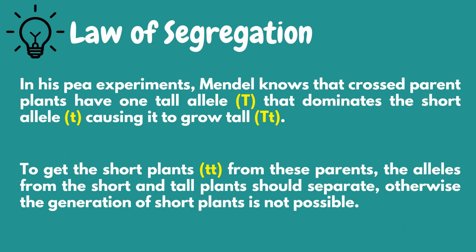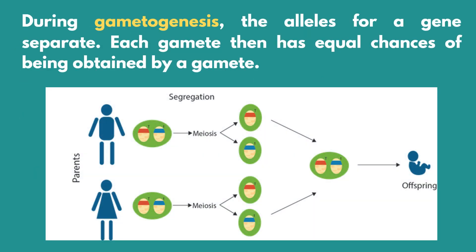The second law is the law of segregation. It states that alleles segregate randomly into gametes. When gametes are formed, each allele of one parent segregates randomly into the gametes, such that half of the parent's gametes carry each allele. In his experiment, Mendel knew that cross-parent plants have one tall allele that dominates the short allele, causing it to grow tall. To get short plants from these parents, the alleles from the short and tall plants should separate; otherwise, the generation of short plants is not possible. During gametogenesis, the alleles for a gene separate, and each gamete then has an equal chance of being obtained.